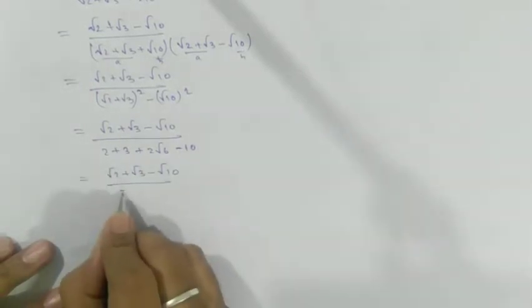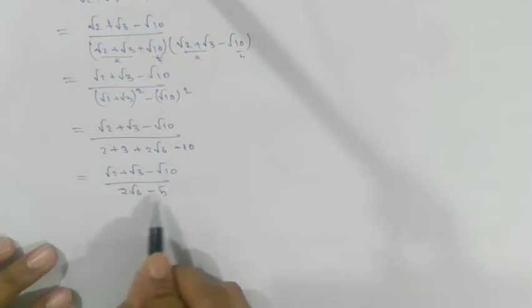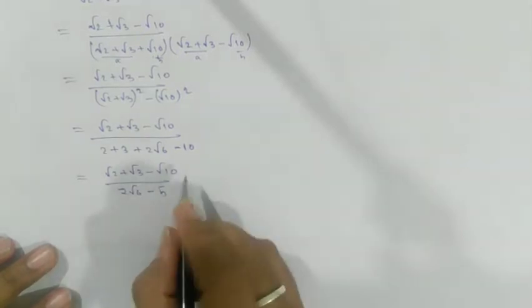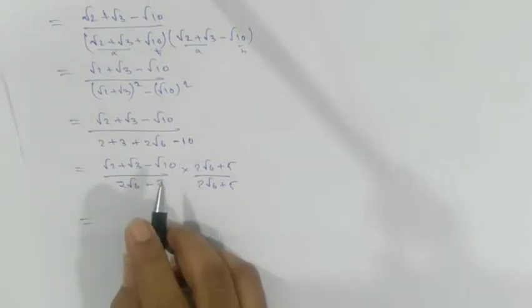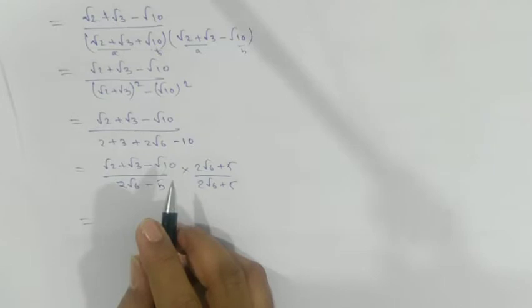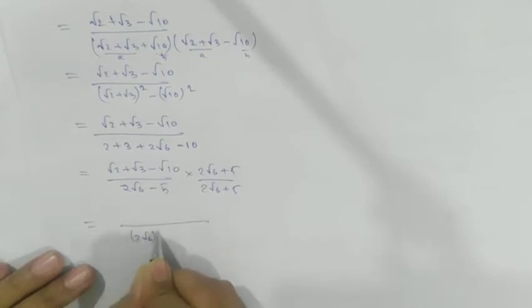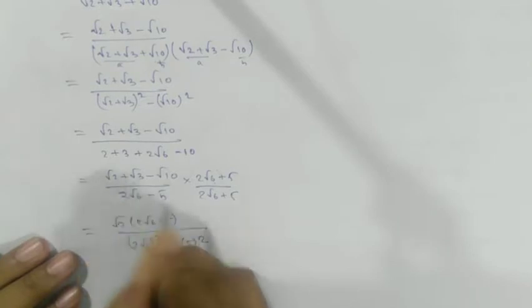This simplifies to 2√6 - 5. But this is still irrational, so we multiply again by the conjugate (2√6 + 5) over (2√6 + 5). The denominator now becomes a² - b² form: (2√6)² - 5².